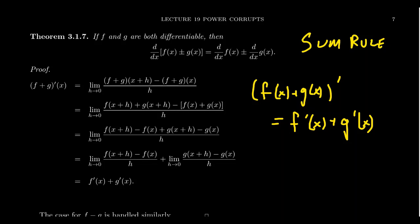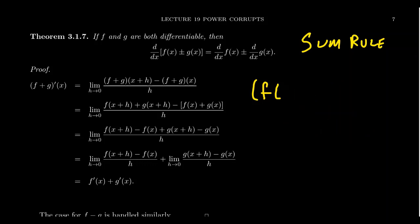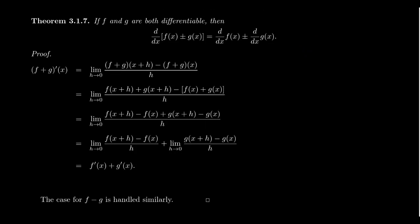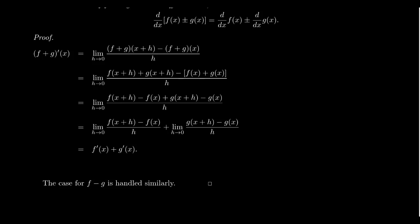It's also true for differences: the derivative of f of x minus g of x equals f prime of x minus g prime of x. The proofs of the sum rule and the difference rule are basically the same. Let's look at the argument behind the sum rule, since f minus g will be handled very similarly.